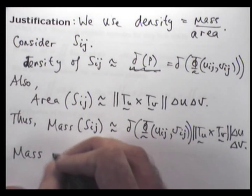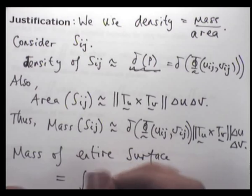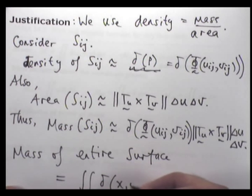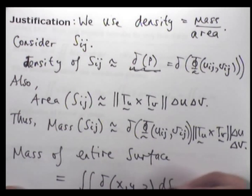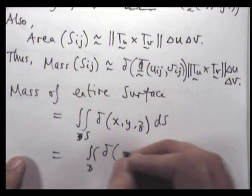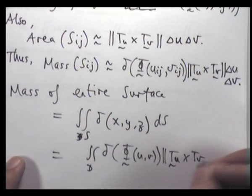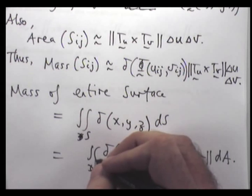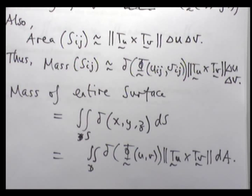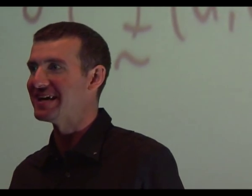The mass of the entire surface — in the limit, we'll get the following double integral. You should be seeing a pattern here between this lecture and the previous lectures. You may be sick of Riemann sums by the end of this course — I apologize for that.